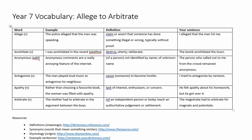Anonymous means where you don't know somebody's name — their identity is hidden. So, the person who called out to me from the crowd remained anonymous. I didn't know who it was.